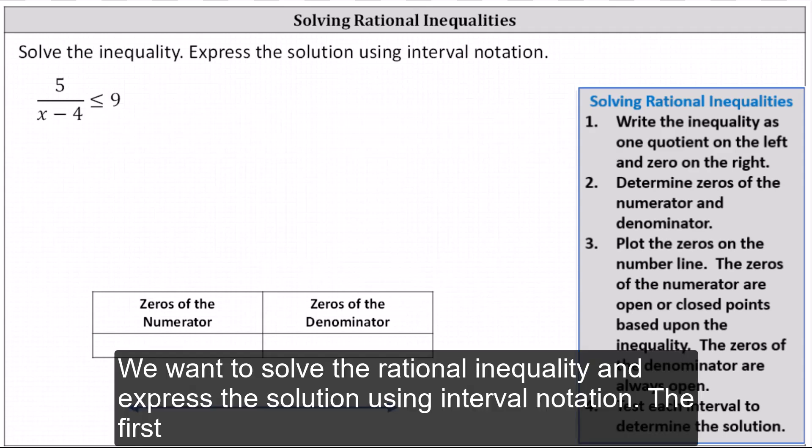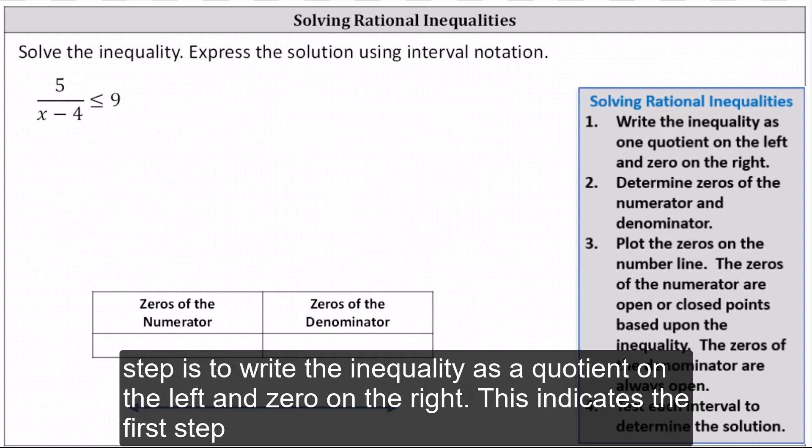We want to solve the rational inequality and express the solution using interval notation. The first step is to write the inequality as a quotient on the left and zero on the right.